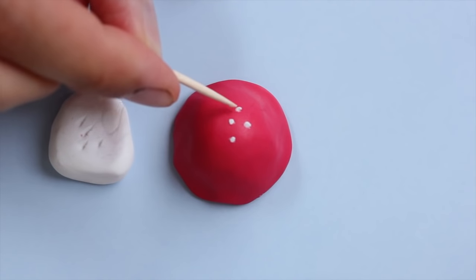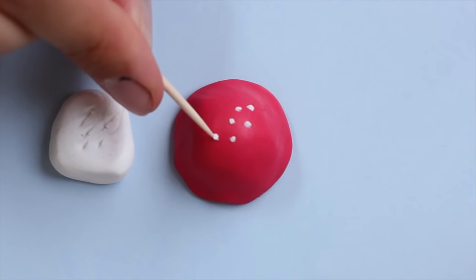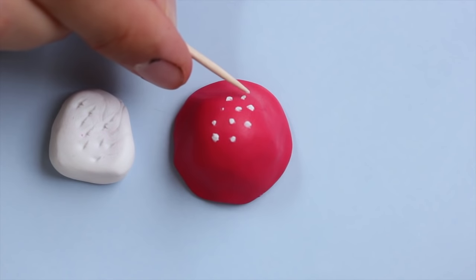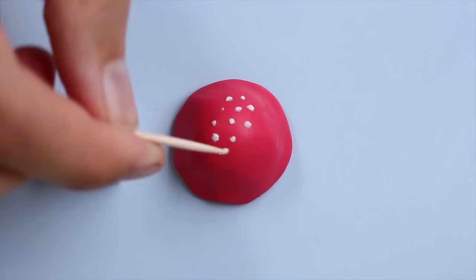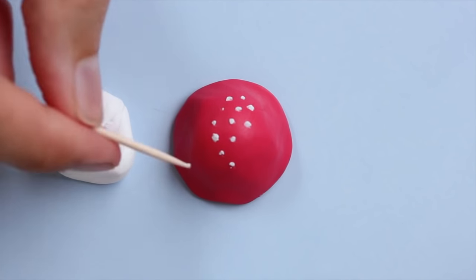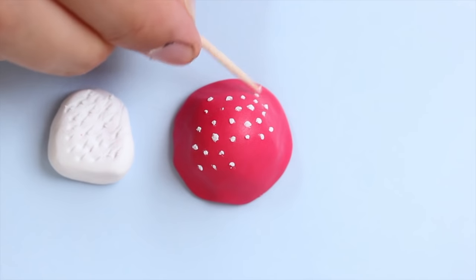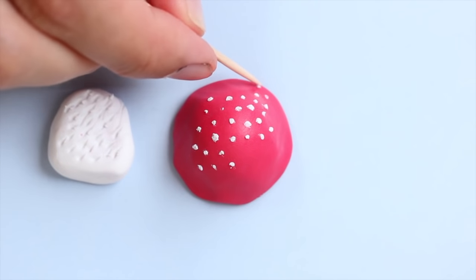We started with a red ball of clay and flattened it out on the bottom, put it on a tile, and now we are adding tiny bits of white clay on top. We're simply using a toothpick to grab tiny bits of white clay and stick them to the red clay. As the red clay is still unbaked, you do not need to put any liquid clay on top, as it will naturally stick. Pretty easy.